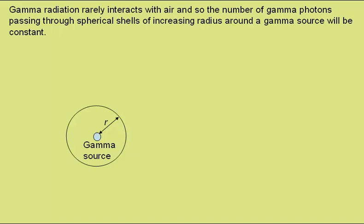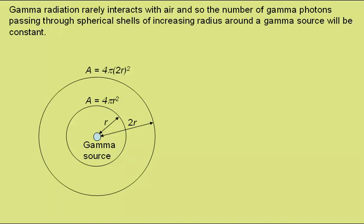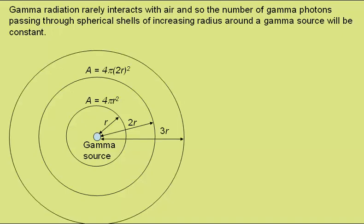The area of a sphere of radius R is given by 4πR². We could draw another shell of radius 2R with area 4π(2R)², and another shell of radius 3R with area 4π(3R)².